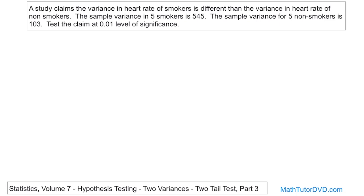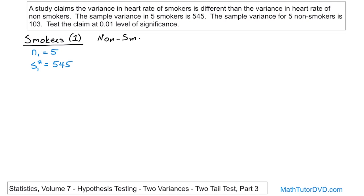So the first thing you do is write down your data. You have group number one, which are the smokers. In group one, n sub one is only five people, and the sample variance in heart rate — which is the spread of the heart rate among those people — is 545, a pretty big number. Then we have the non-smokers, group number two. N sub two is also five, and S two squared, the sample variance, is 103.